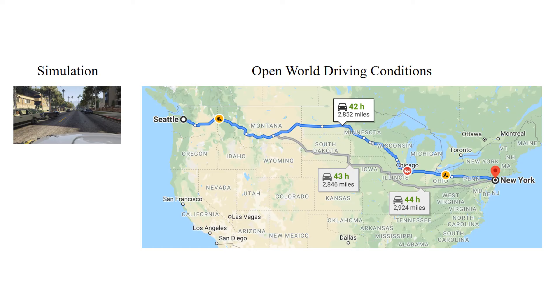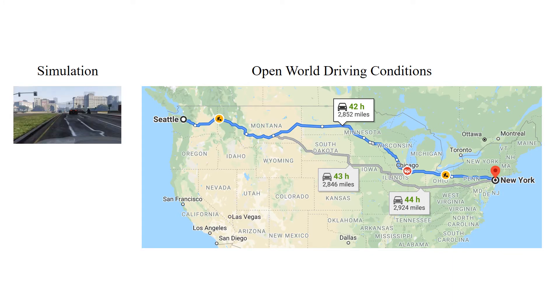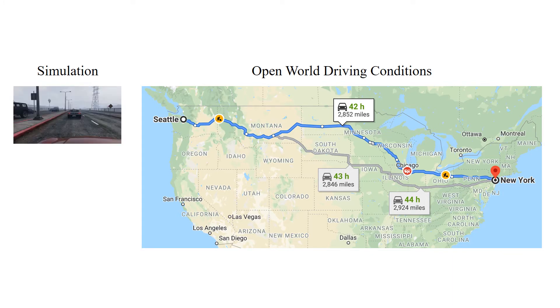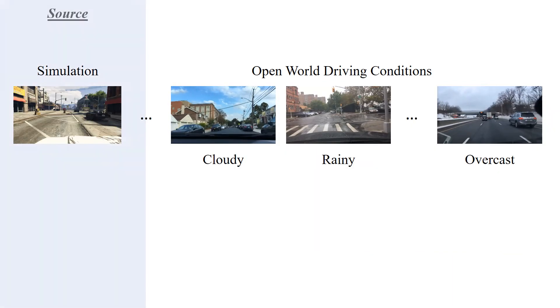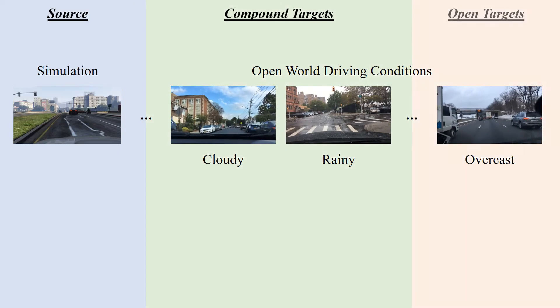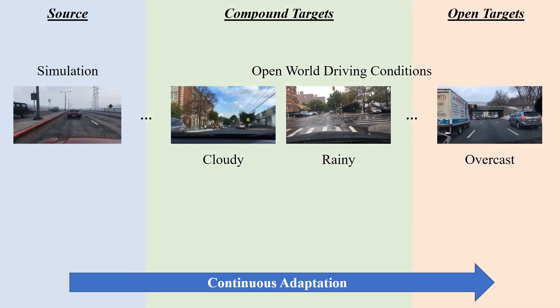Consider you are taking a self-driving car from New York to Seattle to attend CVPR. The self-driving car trained on simulation needs to continuously adapt to open world driving conditions.